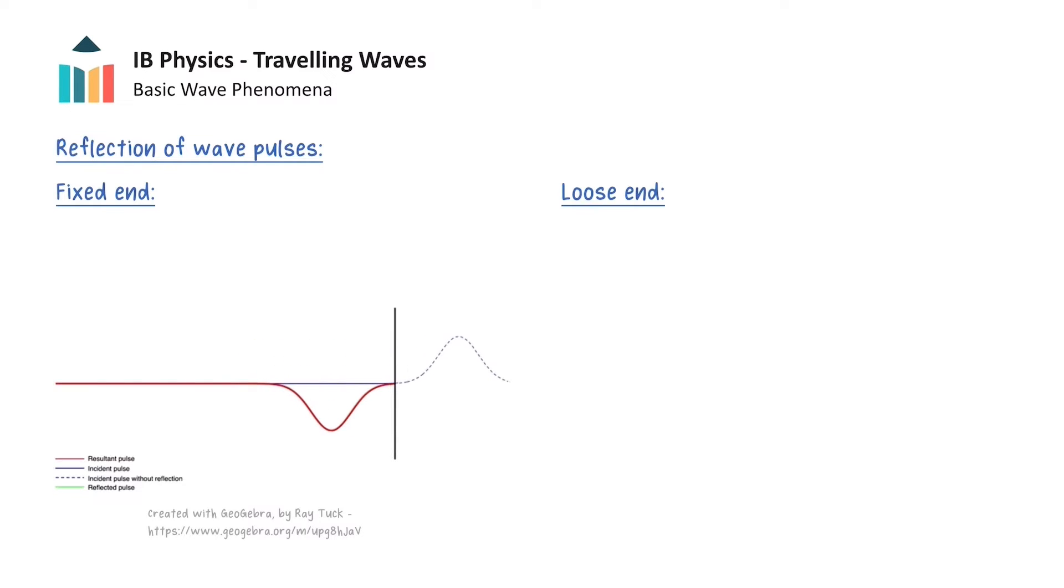By Newton's third law, the wall will exert an equal but opposite force on the rope. This force creates a reflected wave pulse with a negative displacement that travels to the left. So we say that the wave pulse has been inverted, because the wave pulse has experienced a phase change of 180 degrees when it is reflected.